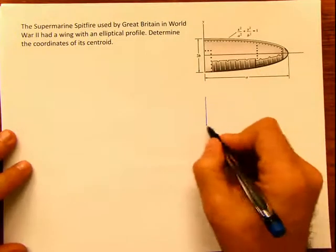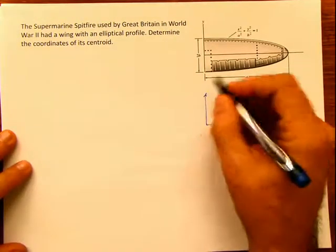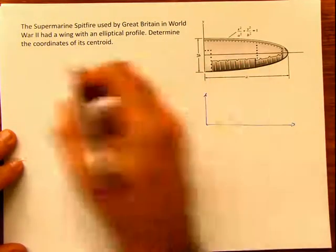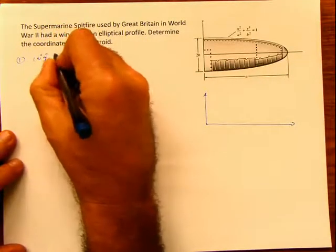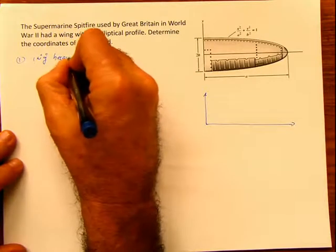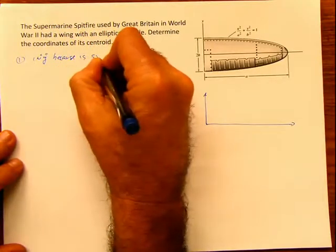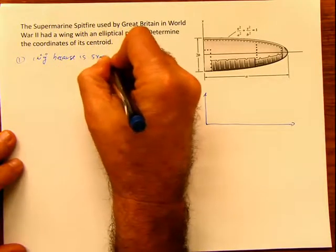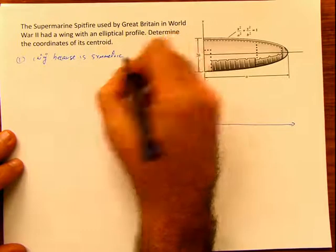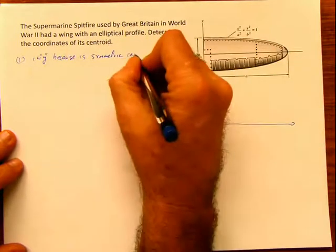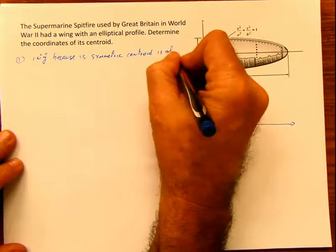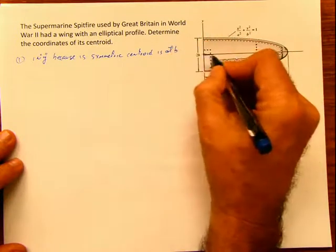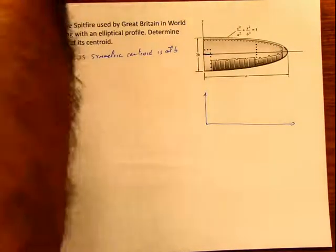Basically, what you have is something like this. In the y direction, because it's symmetric, the centroid is at b. So here, at the center, that distance is to b.